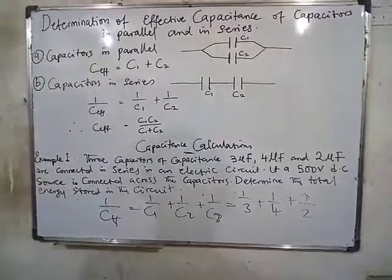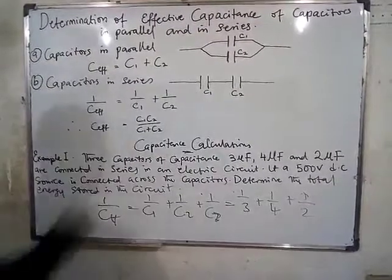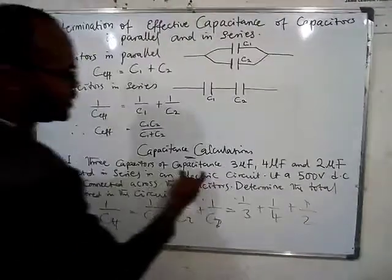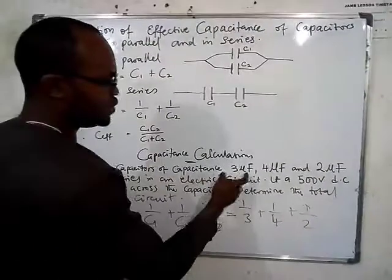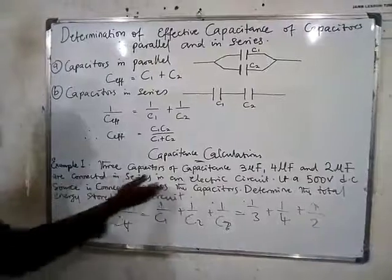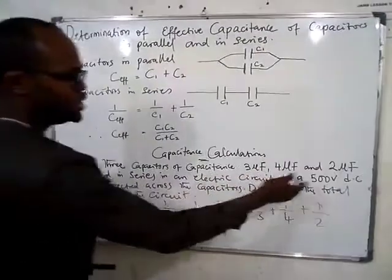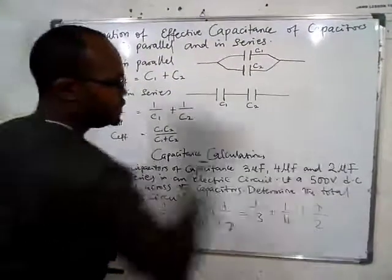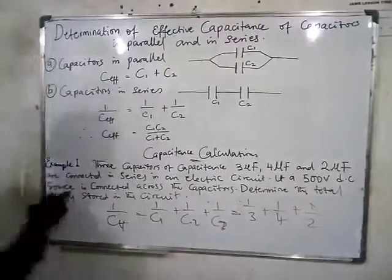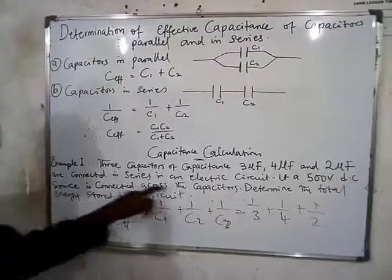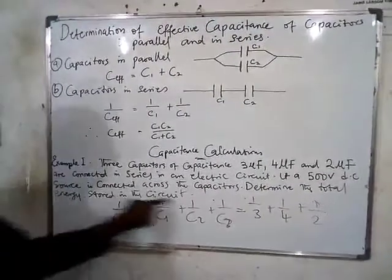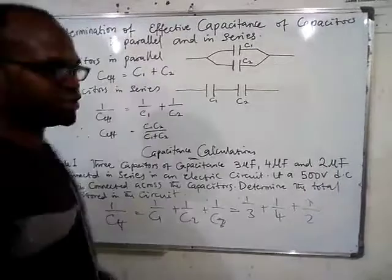The full problem: three capacitors of three microfarad, four microfarad, and two microfarad are connected in series in an electric circuit. A 500 V DC source is connected across the capacitors. Determine the total energy stored in the circuit.